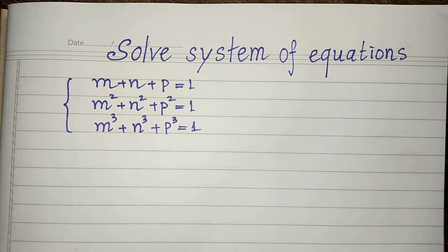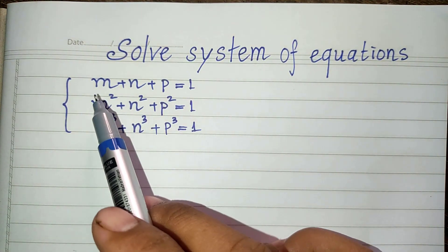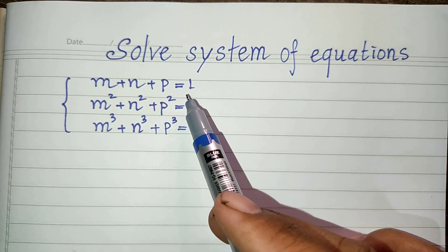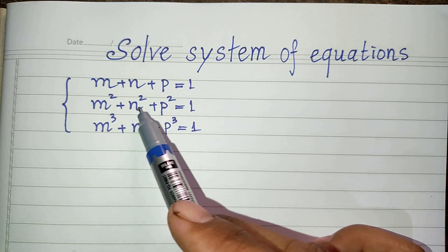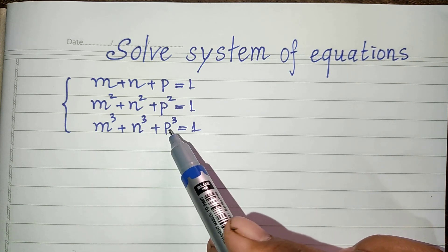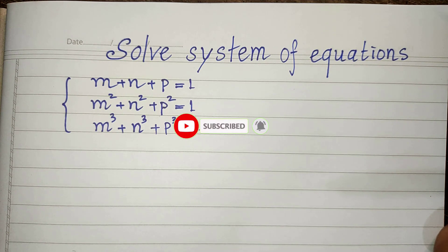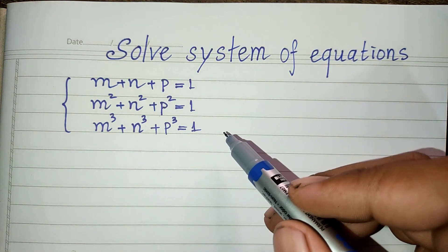Hello everyone, welcome to my YouTube channel. Today I have one exercise: a system of equations. We have m plus n plus p equal 1, m squared plus n squared plus p squared equal 1, and m cubed plus n cubed plus p cubed equal 1. Do you know how to solve this? If you do, please come back to watch my video from beginning to end to verify your solution. Before we go to the solution, please don't forget to subscribe to my channel for more exciting videos.